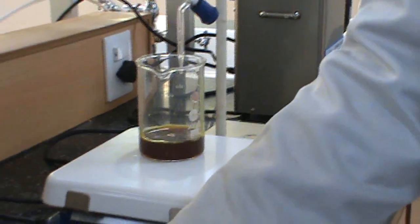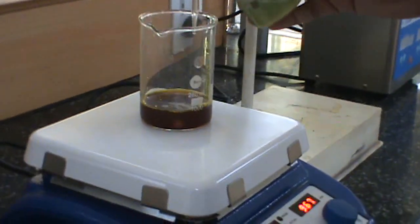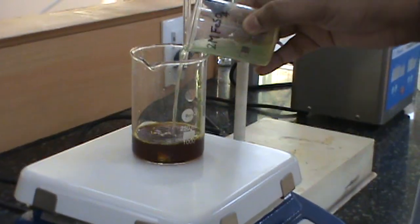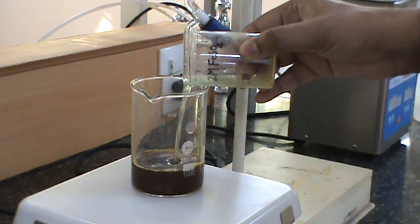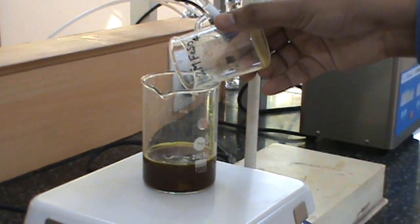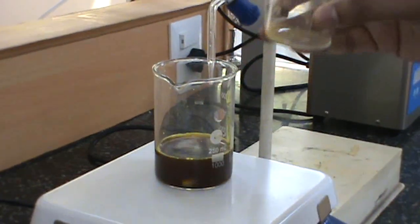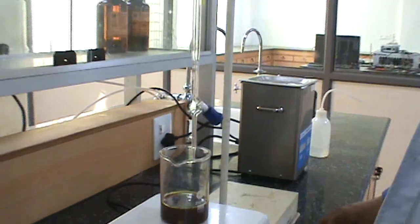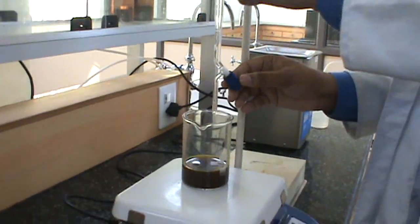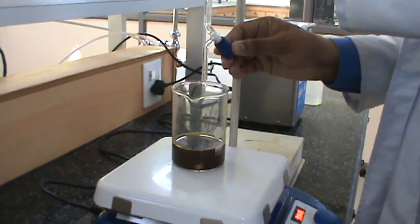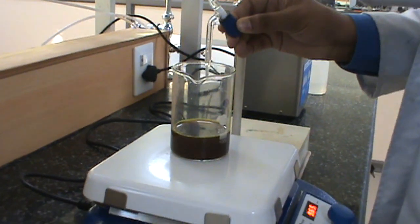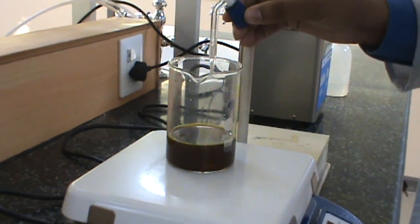Then we are going to mix the Fe2+ sources. We have already filled the ammonium hydroxide in the burette and we will add it dropwise. You will see that iron oxide will start to form as a black precipitate, and we have to do this slowly in order to maintain the particle size.